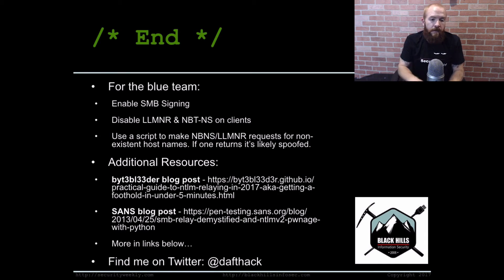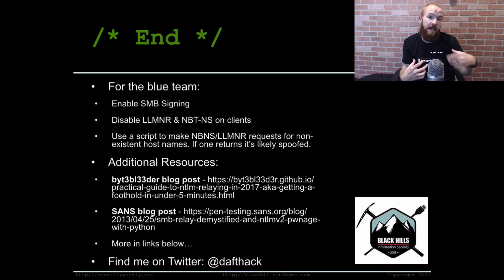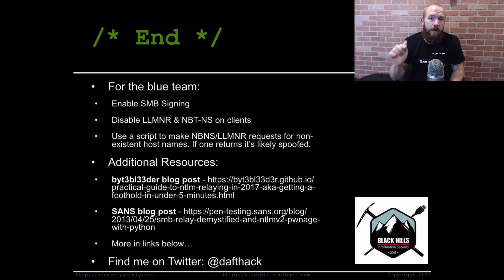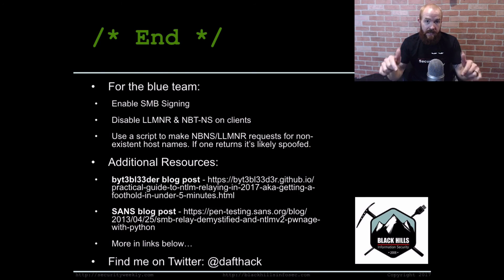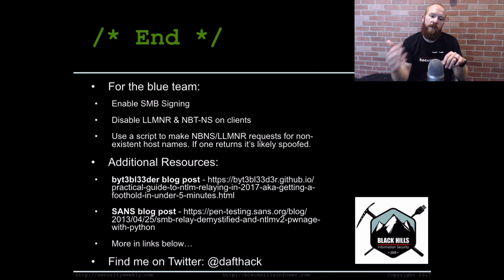You could use a script to make those NBNS and LLMNR requests for non-existent hostnames, and if one returns, then somebody is probably spoofing it on the network. You might be able to script out a way to detect when somebody is running Responder or something like this on your network. For additional resources, byt3bl33d3r wrote a great, very up-to-date blog post on all this stuff — I highly recommend checking it out if you want to explore these specific attacks in more detail. There's also another SANS blog post from 2013. I'm going to include links for all the different tools and resources in the show notes below. Thank you so much for watching, and have a great weekend.